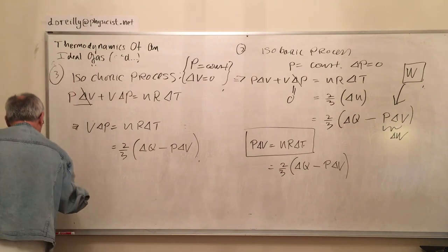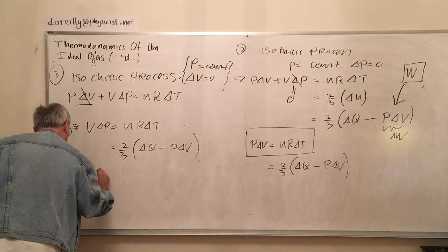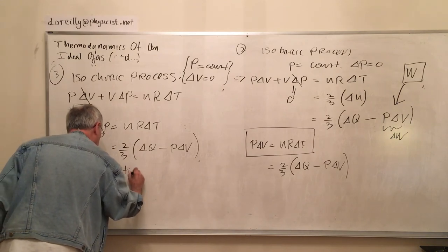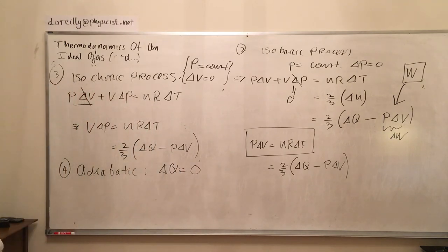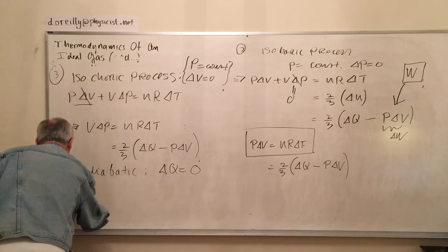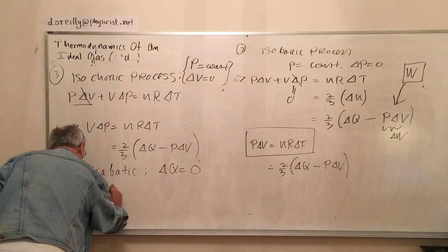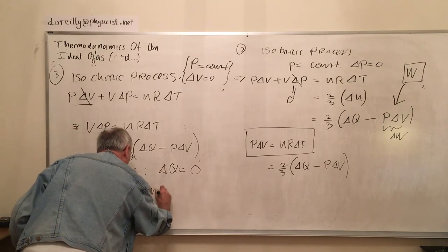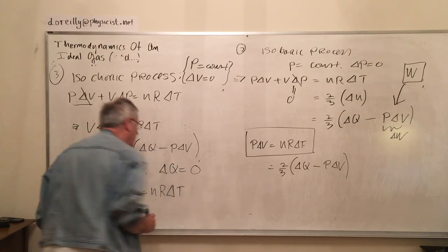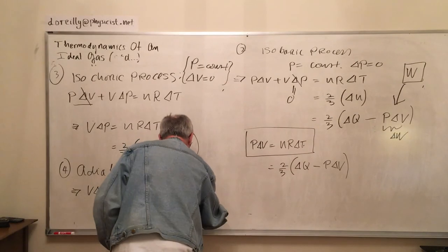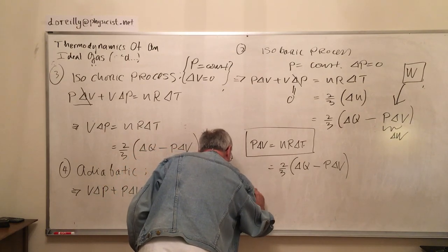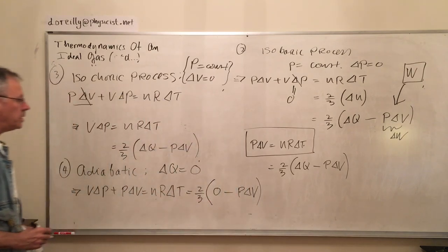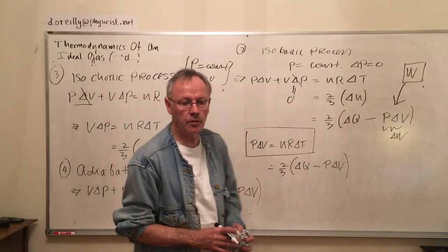Now the next one, this is number three. In the adiabatic process, this term here vanishes. Now I didn't say there was any change in temperature, but the delta Q part is zero. We'll look at these processes with more examples later. That will do for this session of 26 minutes.